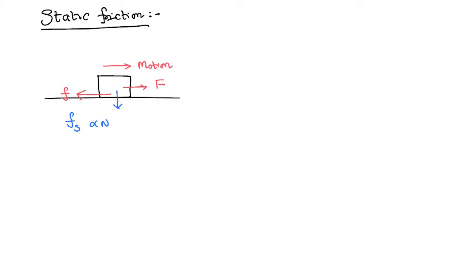The upper body applies a force Mg on the lower surface. The lower surface reacts by applying a reaction of equal magnitude but in the opposite direction, perpendicular to the surface — that is why it is called the normal reaction. We know frictional force is directly proportional to normal reaction. Therefore we can write Fs equal to μs times N, where μs is called the coefficient of static friction, which depends on the nature of the surface but not on the frictional force and the normal reaction.